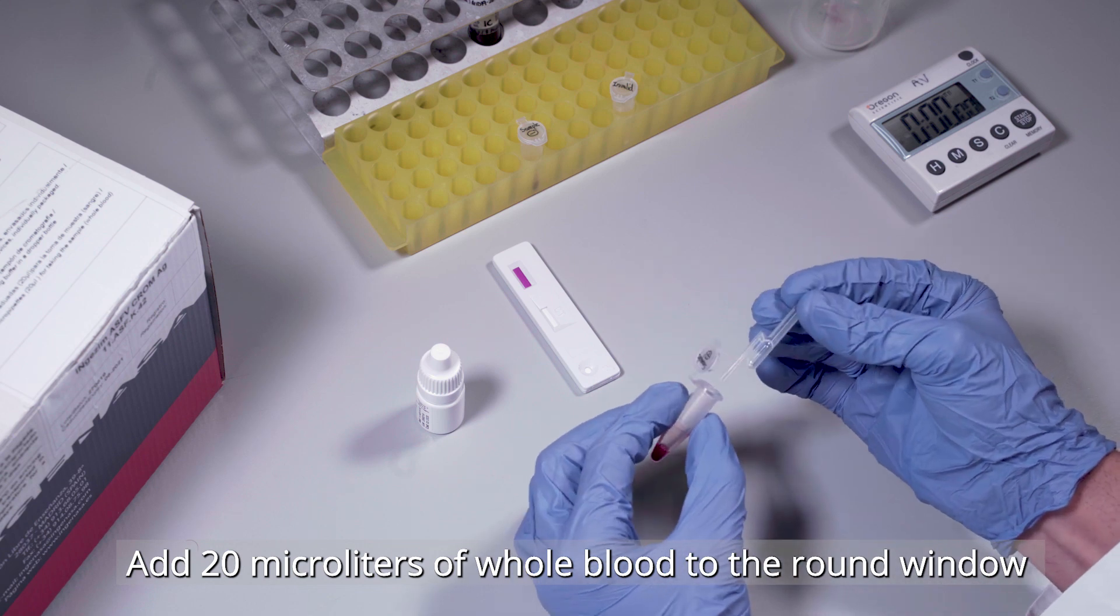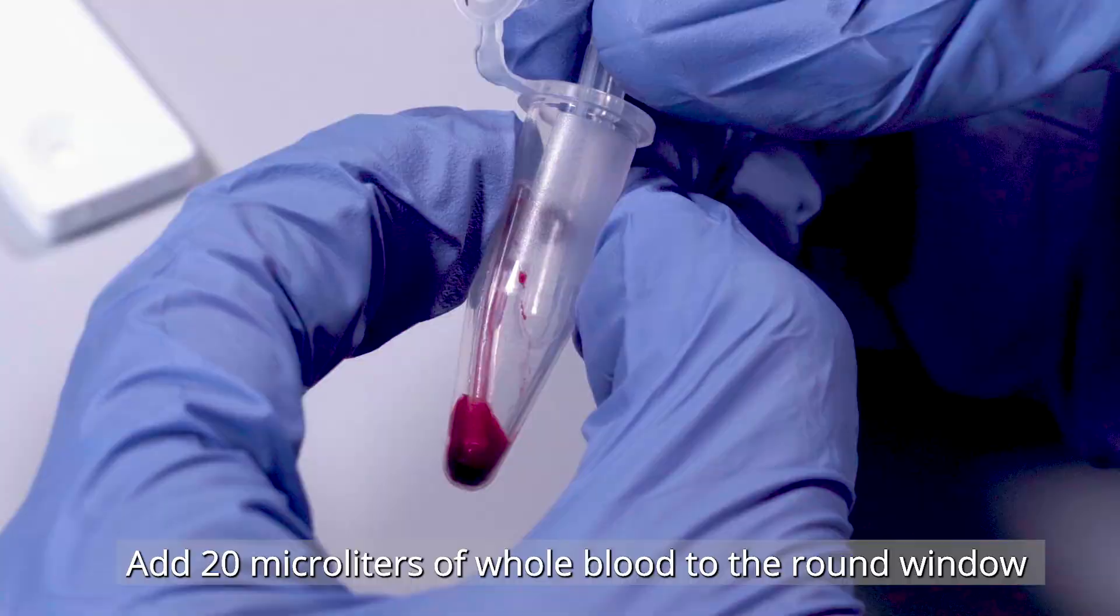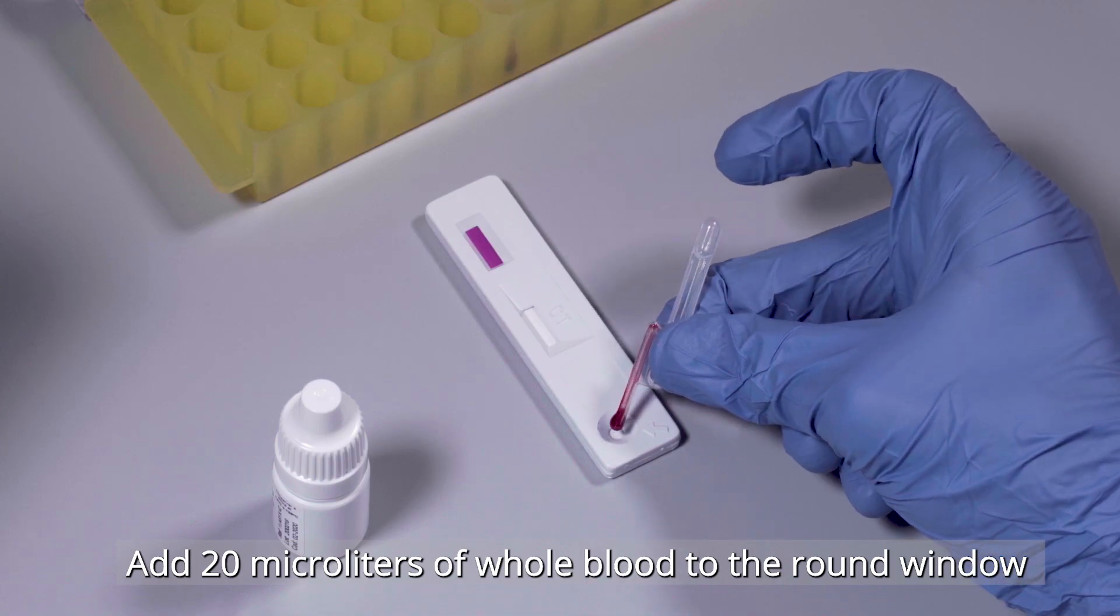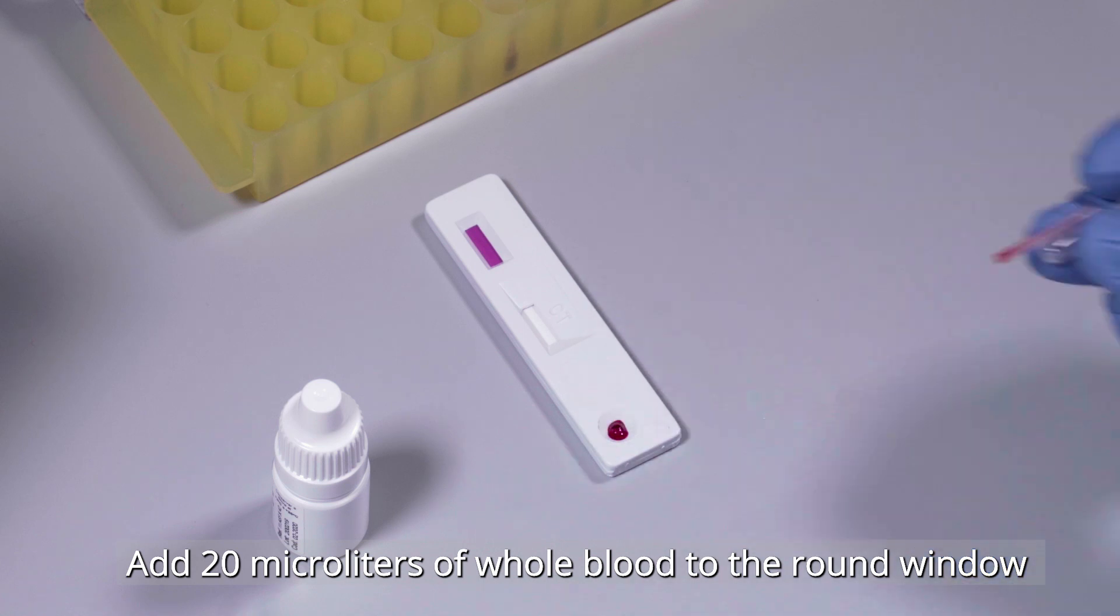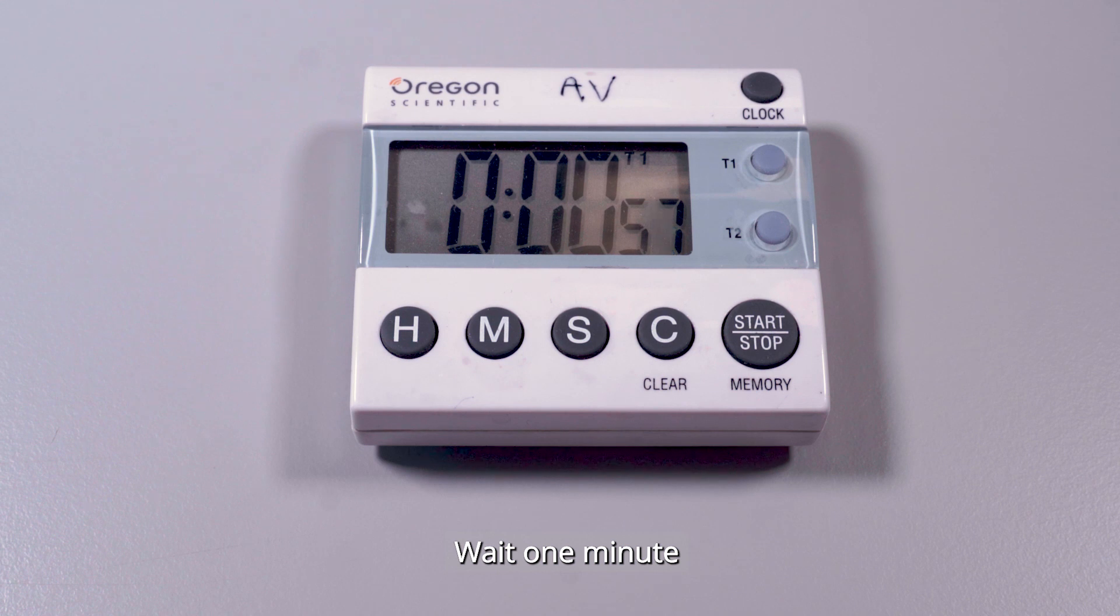Take 20 microliters of the whole blood sample using the micropipette and add them to the round window of the device. Wait 1 minute to allow the sample to absorb and the red blood cells to be filtered.